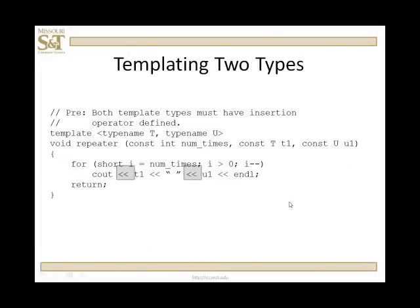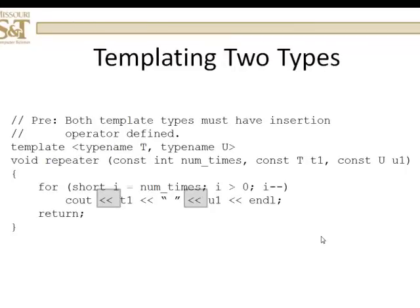And of course you can template on two types. And this is how you would do that. You would have template typename t, typename u. Incidentally, the convention is to name the template parameter a letter near the end of the alphabet and usually in uppercase.